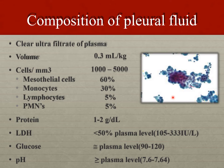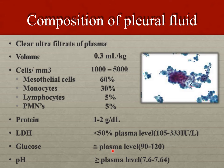Regarding the composition of normal pleural fluid: it is clear, volume is around 0.3 ml per kg, cells are around 1,000 to 5,000 with majority being mesothelial cells at around 60%, monocytes at 30%, and 5% each of lymphocytes and polymorphonuclear cells. Protein is between 1 to 2 g/dL. LDH is less than 50% of the plasma level — remember this for Light's criteria. Glucose is approximately equal to plasma levels, and pH is slightly higher than blood, meaning pleural fluid is more alkaline than blood.